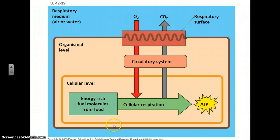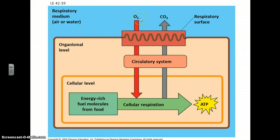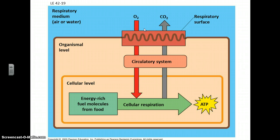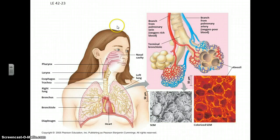Transitioning to the respiratory system — these two systems interact in that the respiratory system gets oxygen out of the air and into the circulatory system. It's also the conduit by which CO2 from your cells' metabolic processes moves into the circulatory system, then into the respiratory system, and out of the organism. This respiratory system can take various forms, such as the gills of a fish, but in us, it's our lungs.